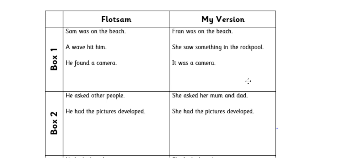I'm moving on to box two now. So, in Flotsam, Sam asked other people. He was on the beach. There were other people there, but they didn't know who it belonged to. Maybe they didn't know what it was. And then he had the pictures developed. Well, in my story, Fran just asked her mum and dad — maybe they were the only other people with her on the beach. She asked her mum and dad, but they didn't know what the box was. And then she had the pictures developed. You must visit a photo shop to get the pictures developed — otherwise, how do you know what the pictures are of? Pause the video and get box one and box two finished before we move on to box three.